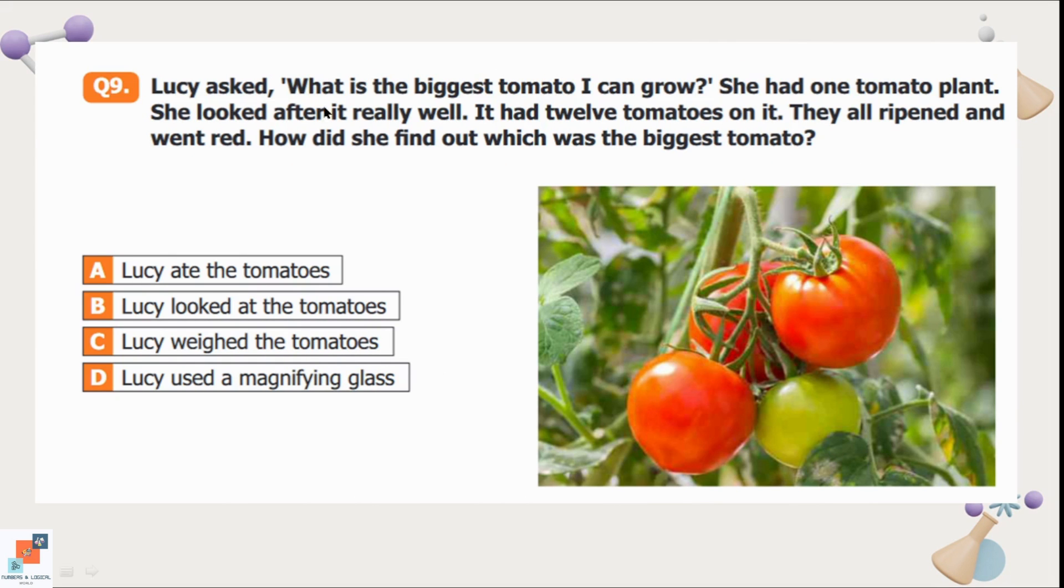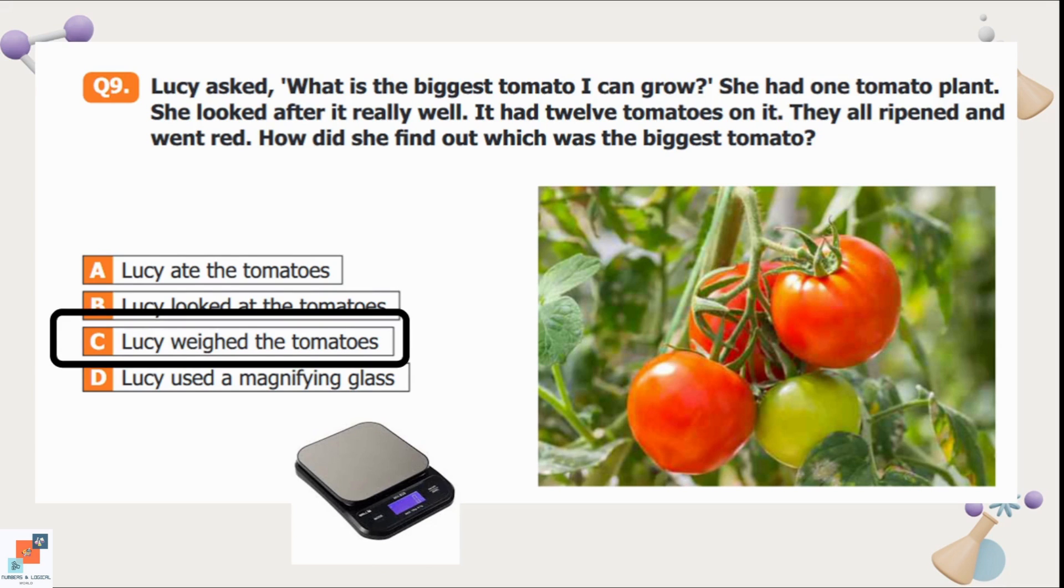Question number 9: Lucy asked what is the biggest tomato I can grow? She had one tomato plant. She looked after it really well. It had 12 tomatoes on it. They all ripened and went red. How did she find out which was the biggest tomato? Option A is Lucy ate the tomatoes. Option B is Lucy looked at the tomatoes. C is Lucy weighed the tomatoes. And option D is Lucy used a magnifying glass. To check the weight of the tomatoes she will use a weighing machine instead of looking at them or eating them. Option C is the correct option. Lucy weighed the tomatoes to see which one is the biggest.